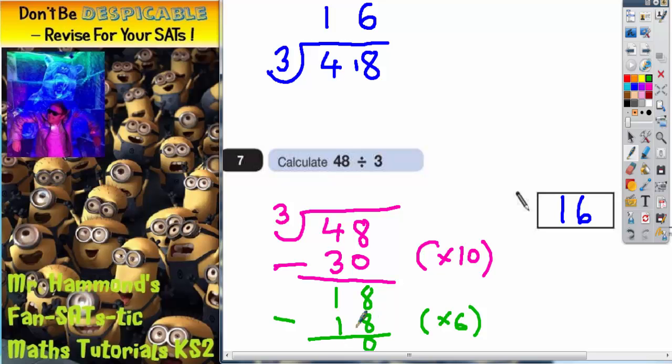8 take away 8 is 0, 1 take away 1 is 0. So you've got nothing left. So once you've got nothing left, the whole point of chunking is that you count up how many chunks you've done.